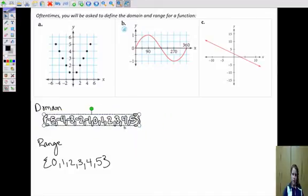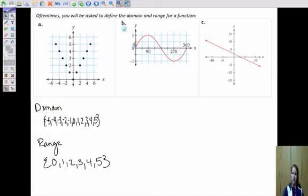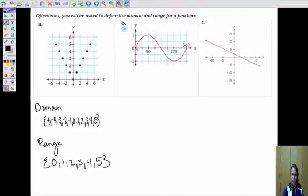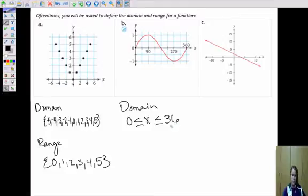Moving on over to this next graph, we have a continuous curve here from zero to 360. And notice at the end of our line, we don't have arrows. So we're going to assume that's where that line ends. So here we can write our domain as zero is going to be less than or equal to x, and then they are below or equal to 360. So everything in between zero and 360 would be our domain.